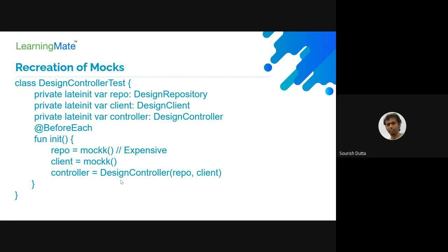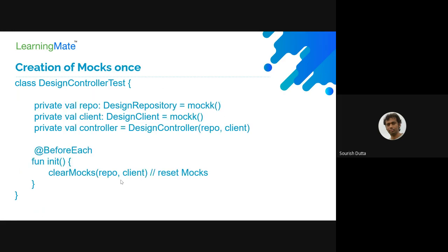Now what we normally do in our test cases is create the mock object in our before each, so that before each unit test is run, objects are mocked. Here two objects are there - one is the external client and one is the repository object. Creation of the mock or the controller object is kind of expensive; every time we have to create another object, another proxy object. So instead, we can follow another pattern where the mock object is created only once.